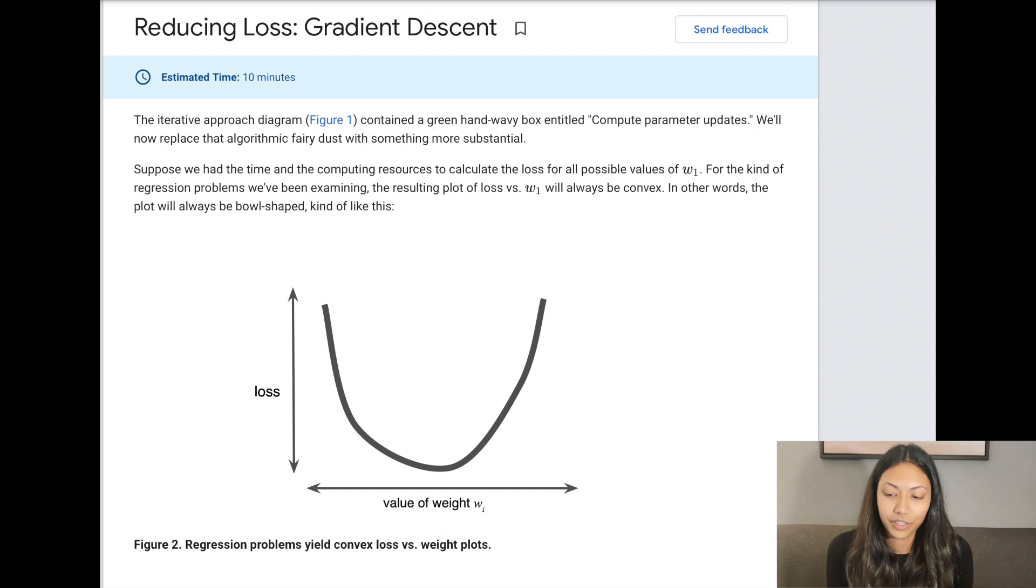What is gradient descent? Gradient descent is an approach. It's a way of trying to find these optimal values of w and b. So let's actually look at how gradient descent works.